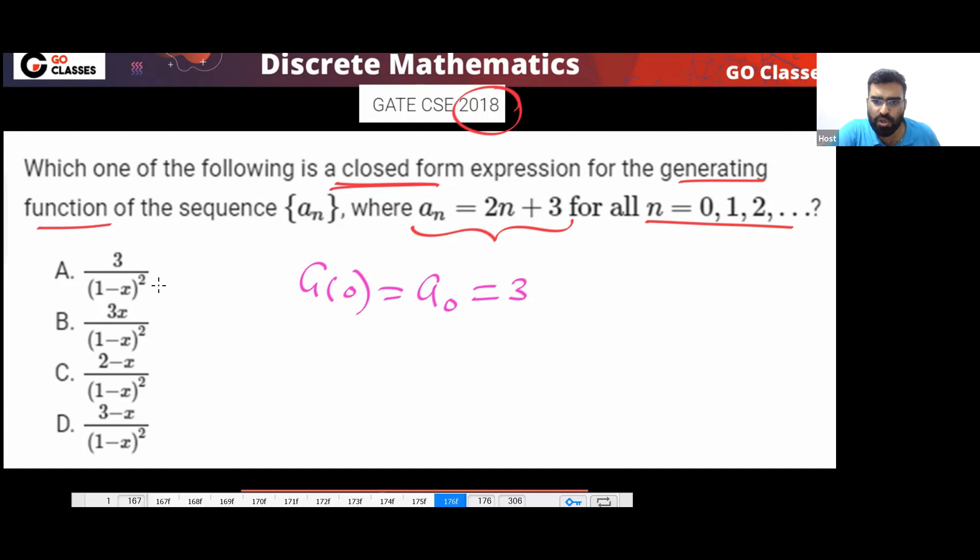So if you put zero, which option can we eliminate? Which option will be gone? This option will be gone. Option C gone. Because if you put zero, you should get three. This is gone.